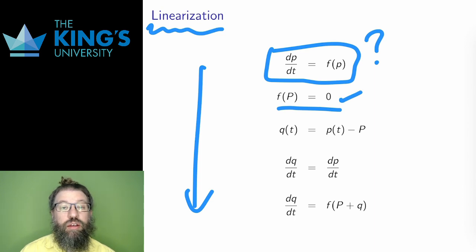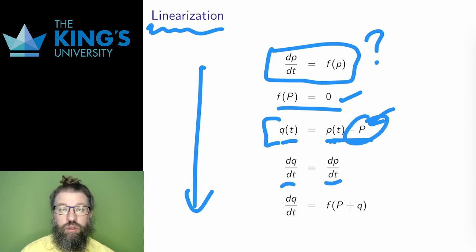Then I'm going to define a new function, q of t. So, remember that p of t is the solution to the differential equation. It's the function I actually care about. q of t is just that p of t function shifted by the number capital P. So, it's the same graph, the same solution I'm looking for, just shifted up or down by some number. Since it differs only by a constant, p of t and q of t have the same derivative.